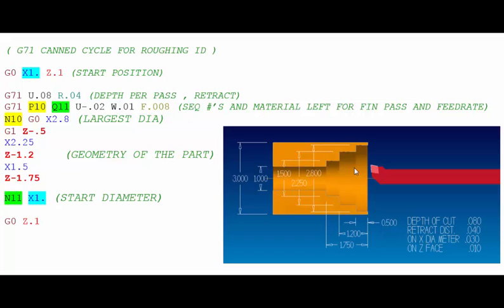Then we're going to get into our G71 canned cycle and the first line tells the canned cycle to do eighty thousandths depth to cut per pass and then retract forty thousandths at the end of each pass and then it will retract back to the Z one hundred thousandths in front of the part and continue that until we are completely roughed all the way to the largest diameter.